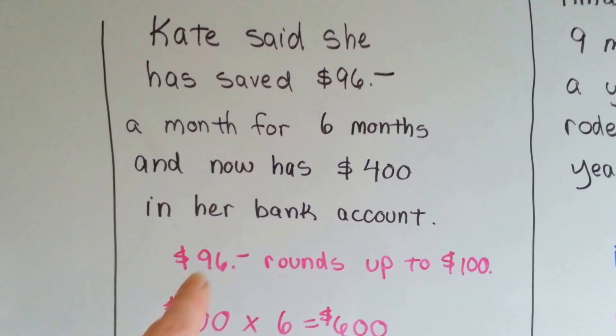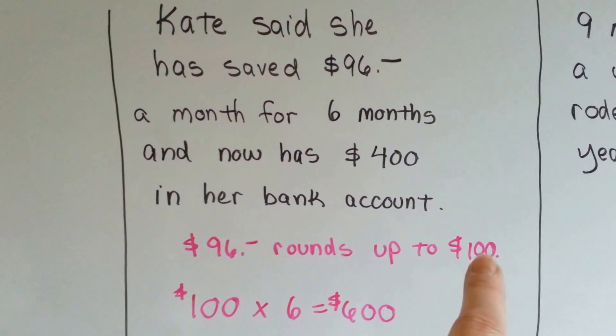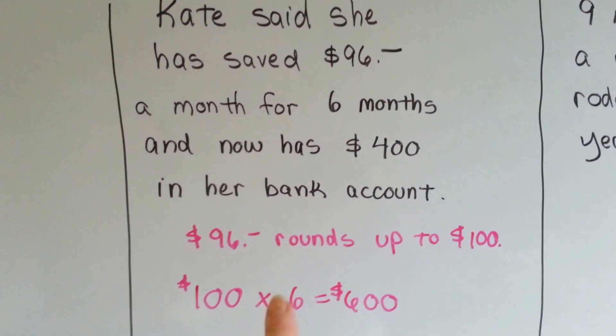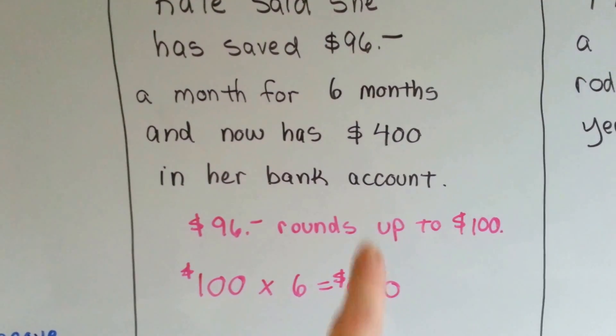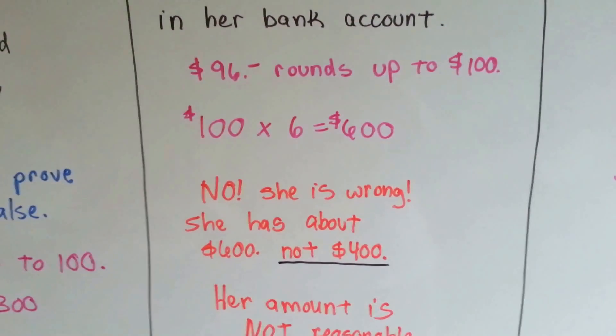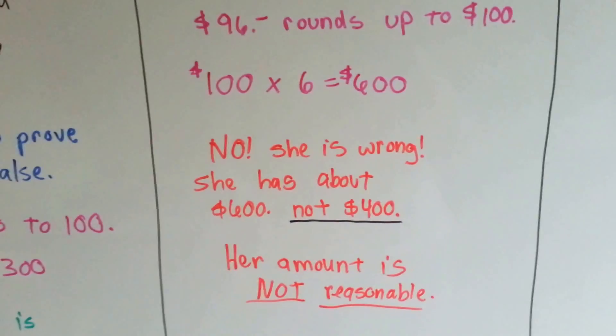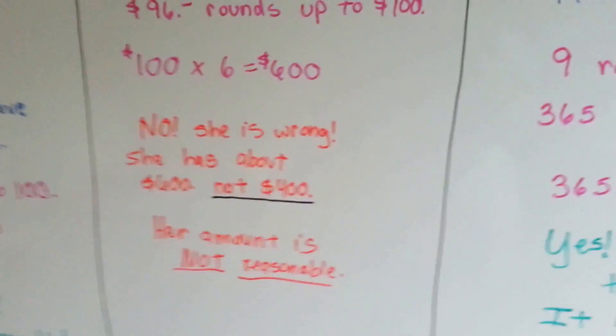Well, $96 rounds up to $100. And if you had saved $100 for 6 months, 100 times 6 is $600, not $400. So she's wrong. She has about $600, not $400. Her amount is not reasonable. She's off by $200. That's a lot.